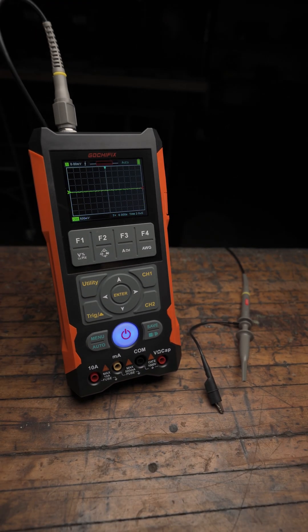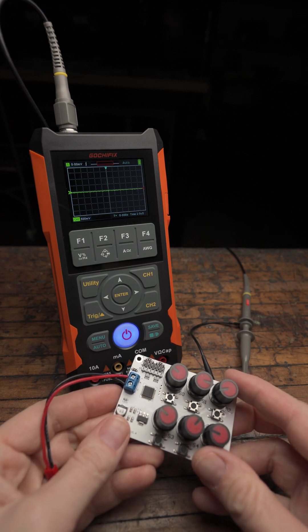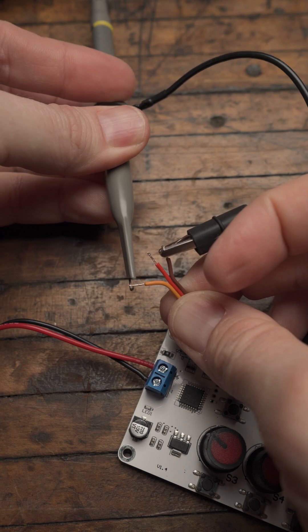An oscilloscope visualizes voltage changes over time. Let's measure a servo tester's PWM output. First, we'll connect the ground clip to the ground, and then the probe to the signal output.